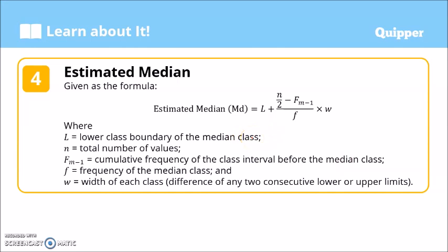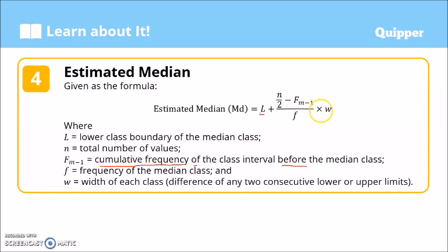To compute for the estimated median, we use the formula: MD = L + ((n/2 − F sub(m−1)) / f) × w. Here, L is the lower class boundary of the median class, n/2 is half the total frequency, F sub(m−1) is the cumulative frequency of the class interval before the median class, f is the frequency of the median class, and w is the class width — the difference between two consecutive lower or upper limits.